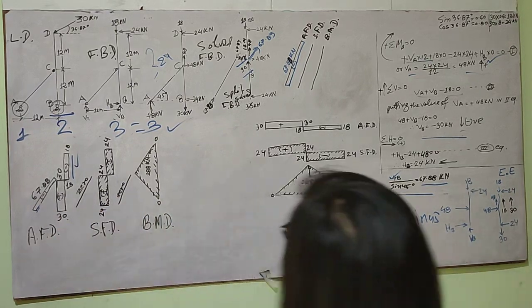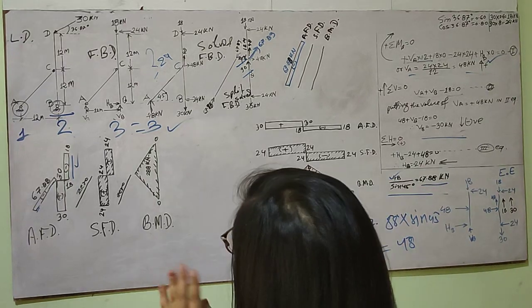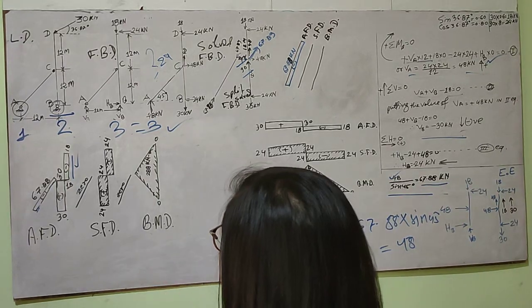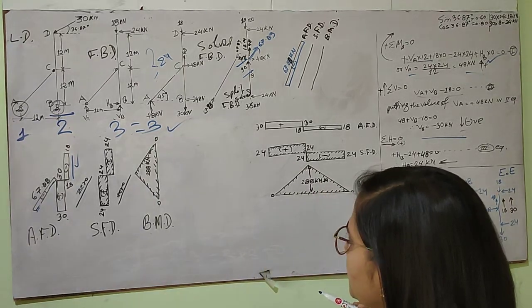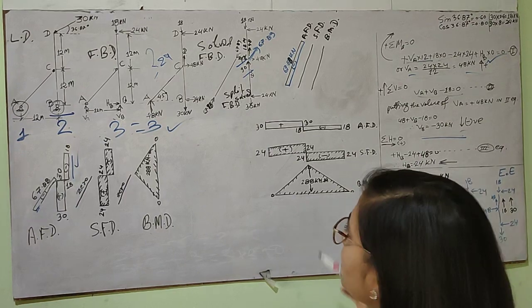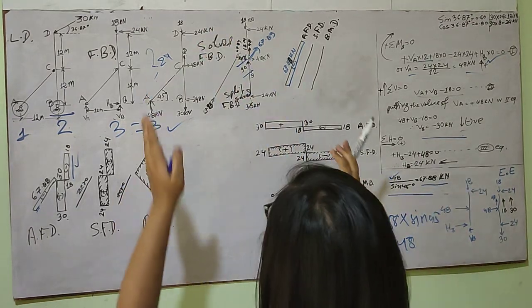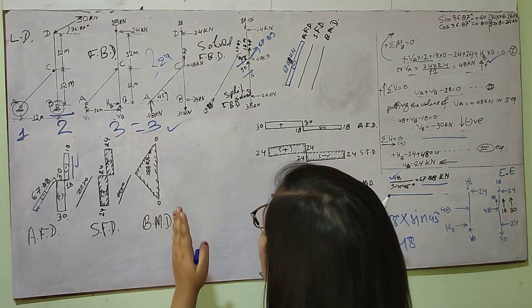Now in order to draw the shear force diagram, I need to make certain adjustments - upward forces are positive and downward forces are negative. If you tilt the member like this, you get the shear force diagram.